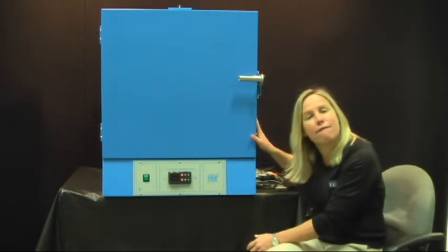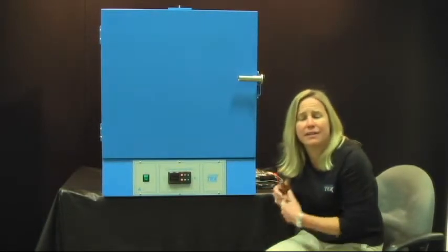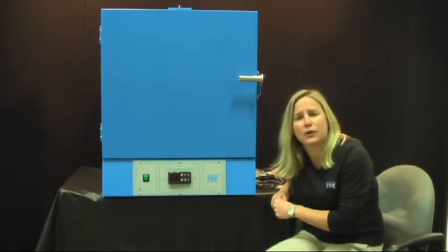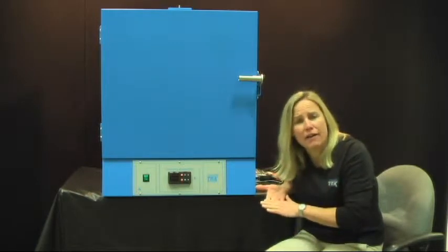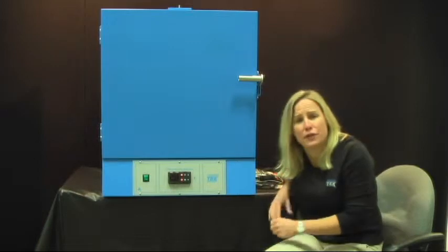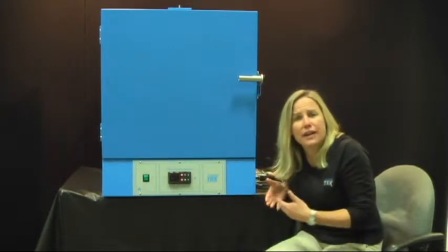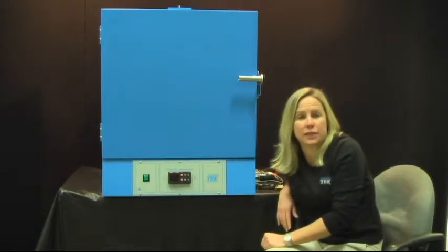Okay, this is a forced air oven. So, for all your Betty Crocker's out there, that's like a convection oven in your house. We all know that the convection oven has a fan in it and it blows hot air across the food in an oven and it ends up cooking the food faster and more uniformly. Same deal with the Cascade Tech forced air oven.